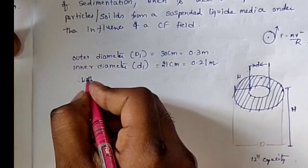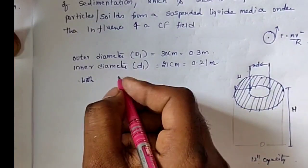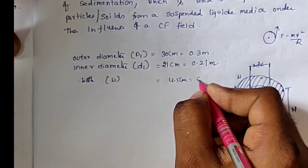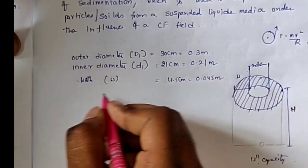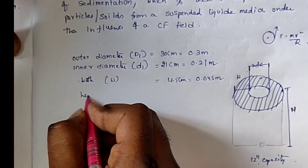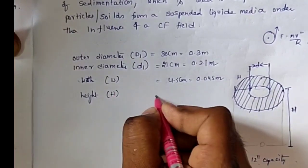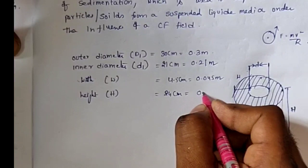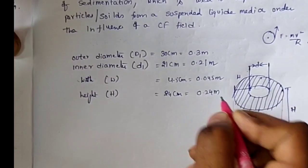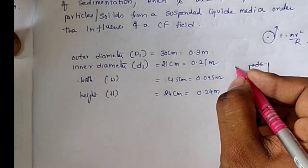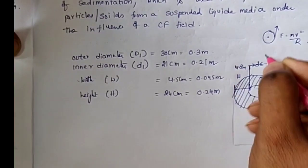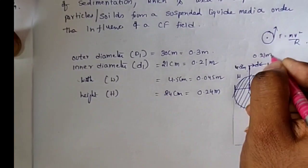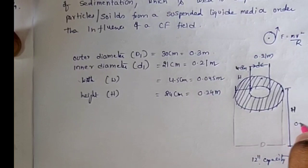Width W equals 4.5 cm, equal to 0.045 meters. Height H is equal to 24 cm, which is 0.24 meters. Width is 4.5 cm, inner diameter is 0.21 meter, and height is 0.24 meter.